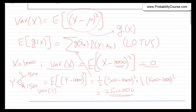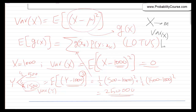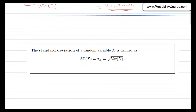This number looks large because squaring creates units that differ from the original variable. For example, if x is in meters, then the variance of x is in meters squared. To solve that, we define a new measure called the standard deviation, which is simply the square root of the variance. We denote it as SD(x) or sigma. The variance is sometimes written as sigma squared.